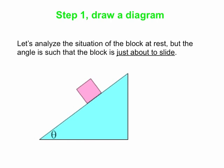Here is the scenario. We have a ramp inclined at angle theta with respect to the horizontal. The block is at rest, and this is the largest angle we can set the ramp at and still have the block stay there. If we go any bigger, the block will slide — so it's just about to slide. This is the limiting case for static friction, meaning we're using the absolute maximum value of the static friction force.